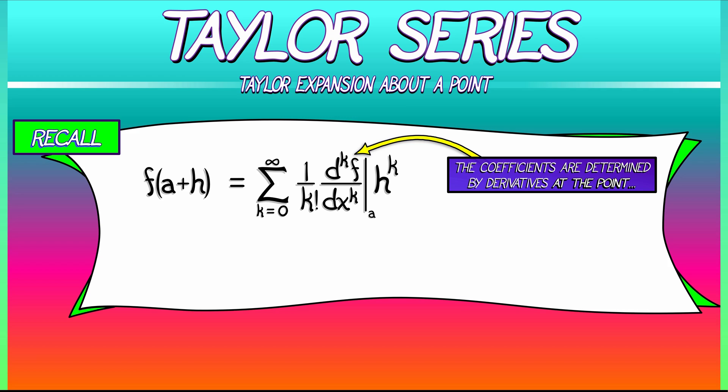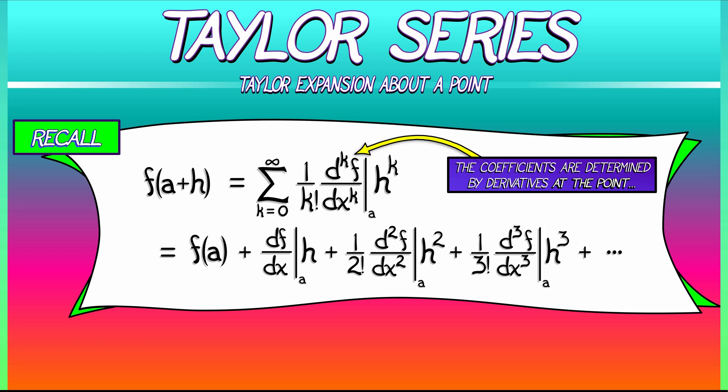If we expand out what those terms are, we begin, of course, with f at a, then we have the first derivative of f at a times h, then the second derivative of f at a times h squared, but with that 1 over 2 factorial out in front. Then we add the third derivative of f at a times h cubed, but with a 1 over 3 factorial in front.